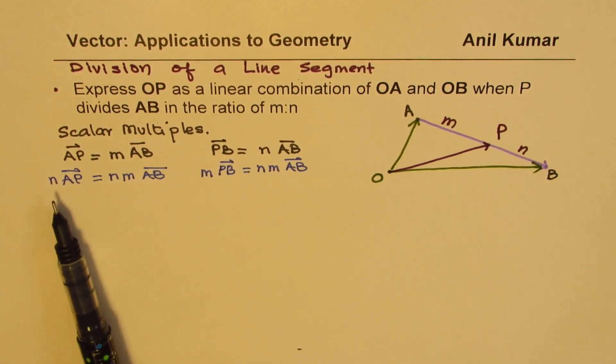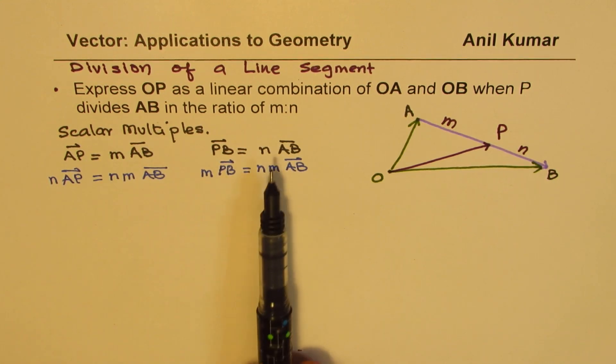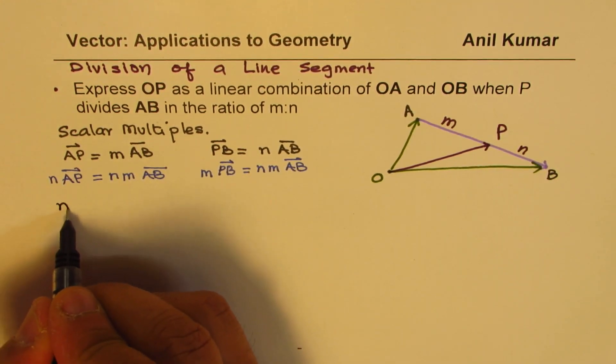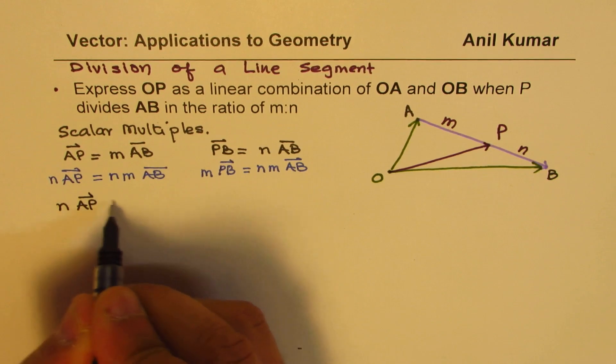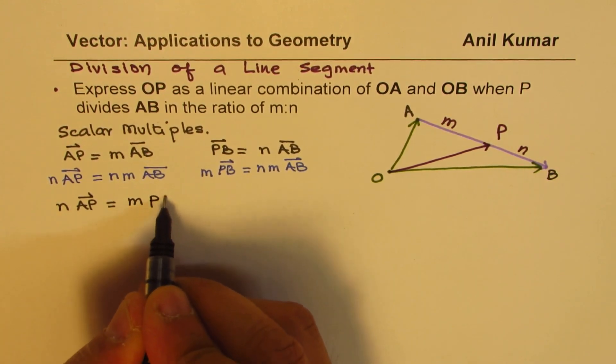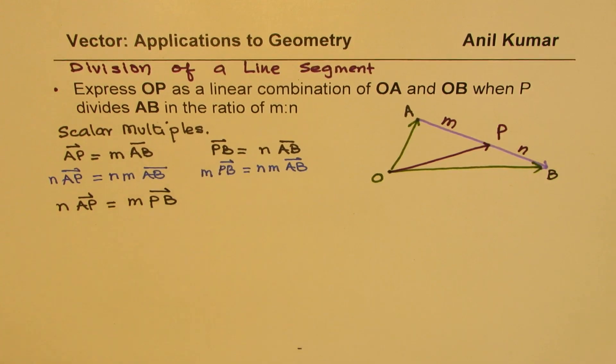When you do that, multiplying the first equation by N and the other by M, in that case we find that the right side is equal, or we could now write that N times AP is equal to M AB is equal to M times PB.